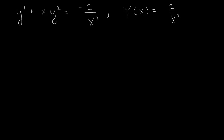And y squared is 1 over x to the 4th, so times x is 1 over x cubed. So minus 2 over x cubed plus 1 over x cubed equals minus 1 over x cubed. So this is a solution. In the case of a Riccati equation where you're given a solution,